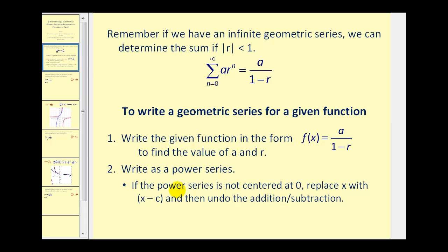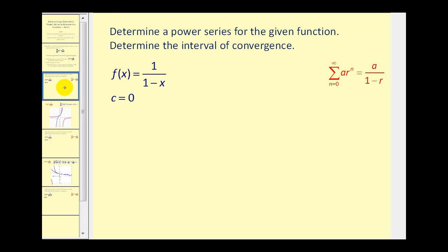Let's take a look at an example of the basic idea. Notice this function matches the exact form of the formula for the infinite sum. Since the function is in this form, we know that a, the first term, must equal one and r would be equal to x.